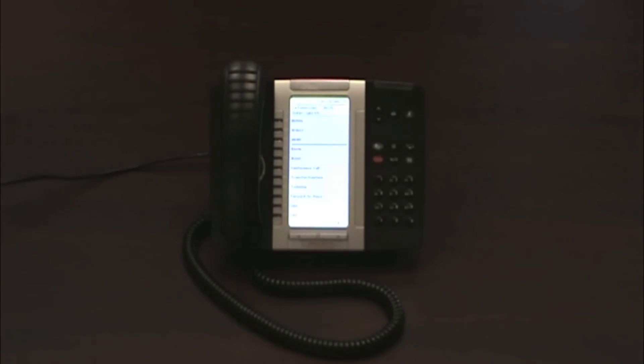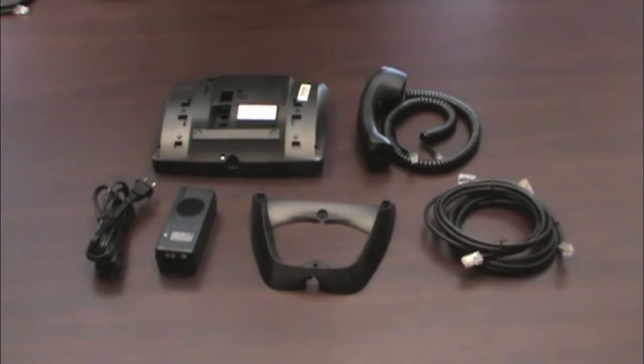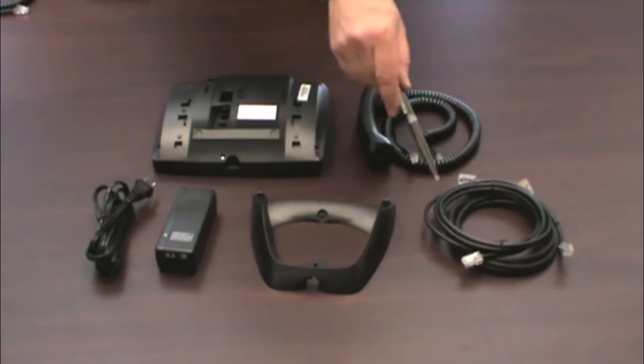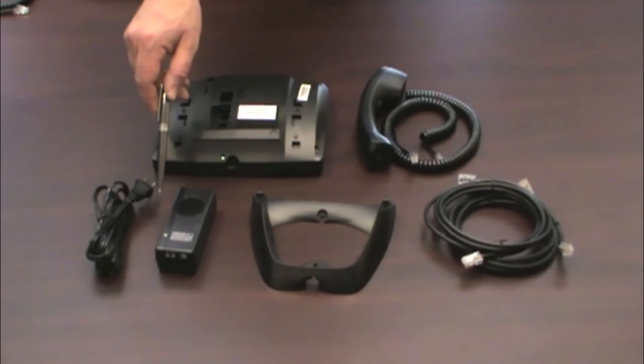This is the Mitel 5330 phone. When you unpack the box, you'll find the phone, the handset, the cord for the handset, the base, some ethernet cables, and a power adapter and cord.